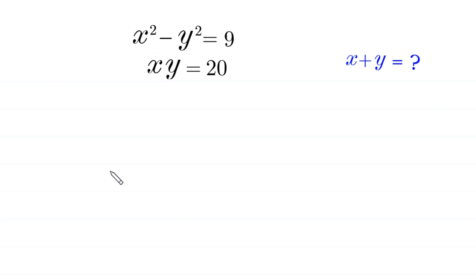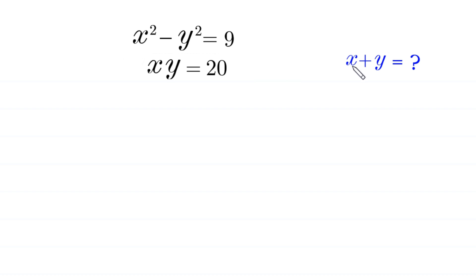Hello everyone, you are welcome to how to solve this very nice system of equations. x squared minus y squared is equal to 9, and x times y is equal to 20. Our job is to find all possible values of x plus y. So, let us start.